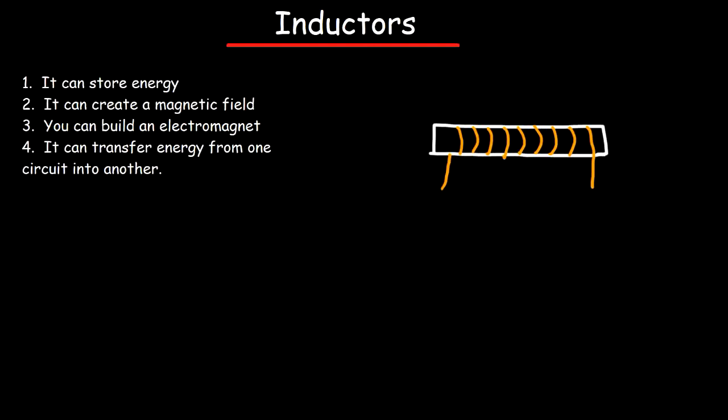An inductor is basically a coil of wire. You can wrap it around a ferrite core or another metal, or it could just be air in between, but it's basically a coil of wire.